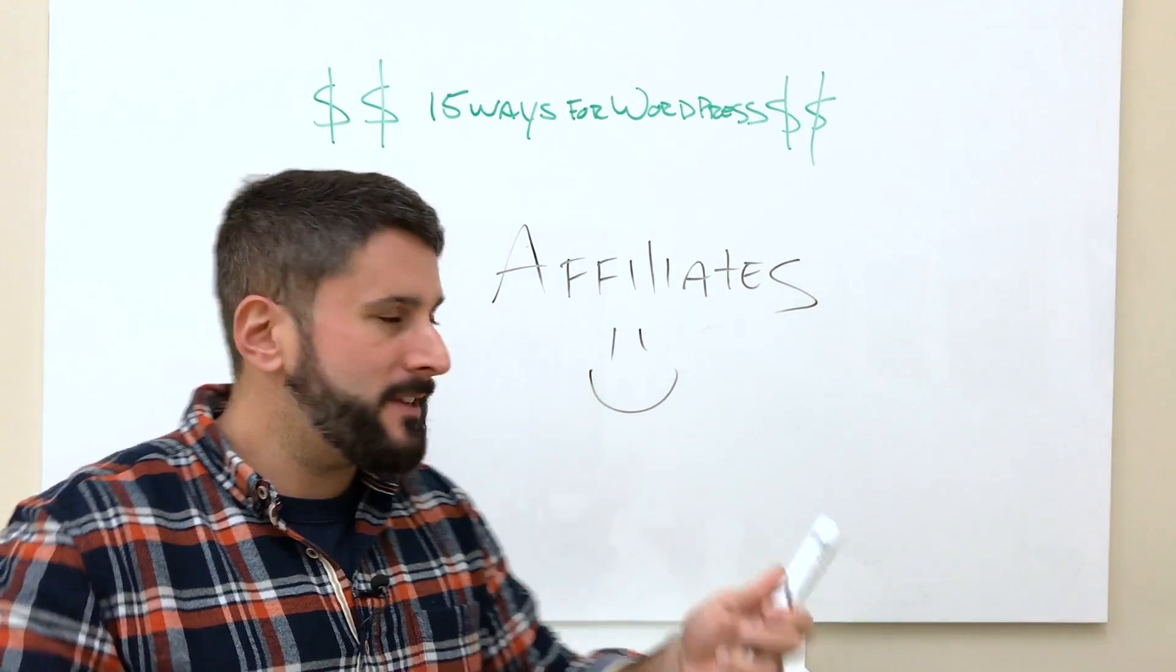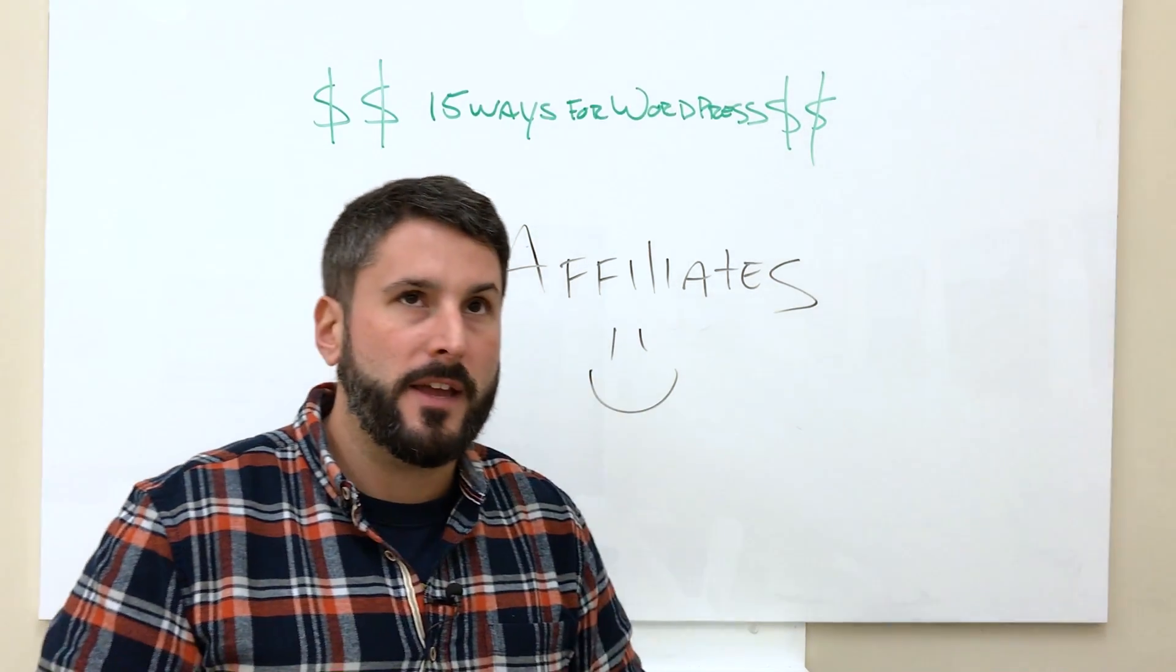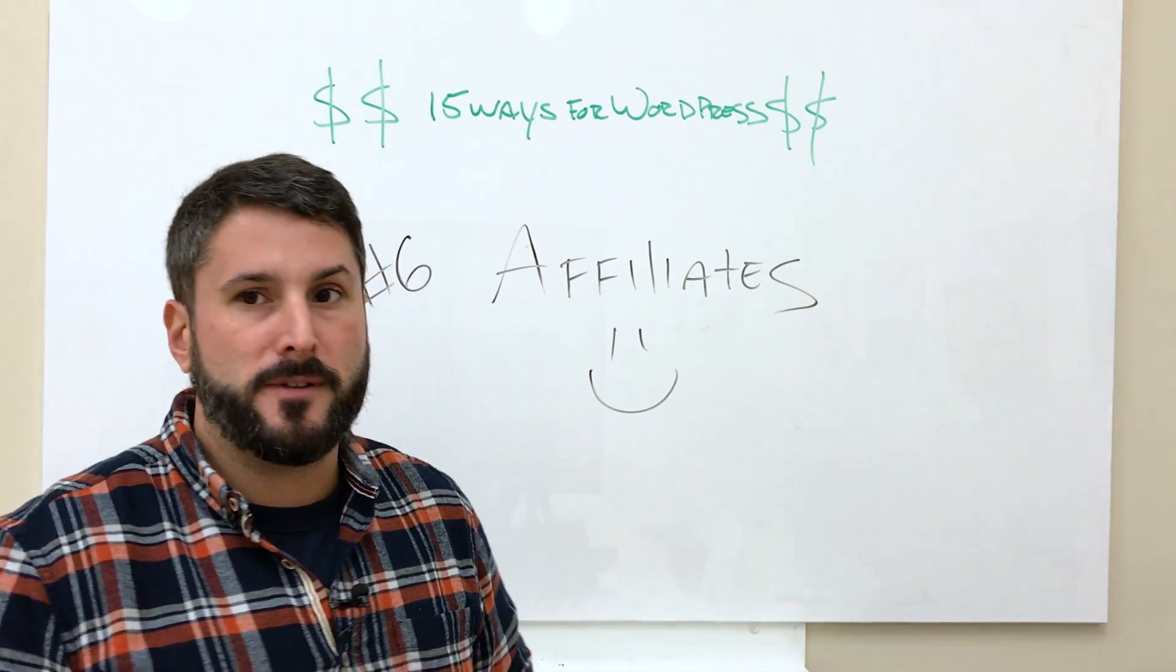Even your own e-books or membership sites, that kind of thing. Use something like Affiliate WP, another Pippins plugins product. Use that to make and increase your online revenue.